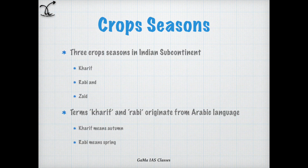There are three main crop seasons in the Indian subcontinent. They are Kharif, Rabi, and Zayed. The terms Kharif and Rabi find their origin in the Arabic language. Kharif means autumn and Rabi means spring.